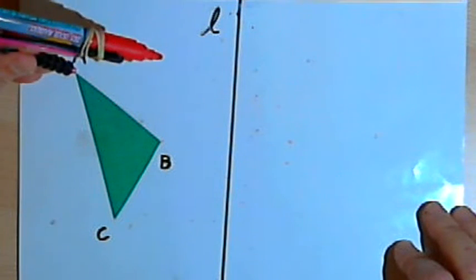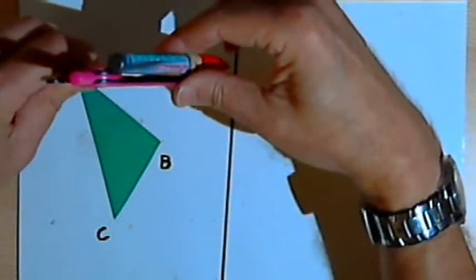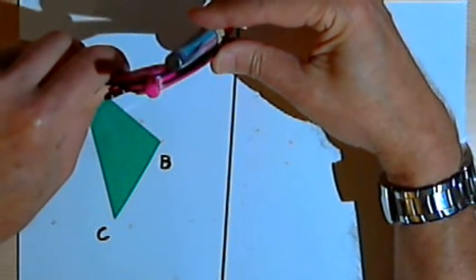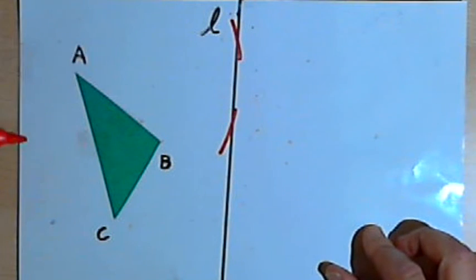I'm going to take a compass and set its point on point A. And then I'm going to draw two arcs that intersect line L.